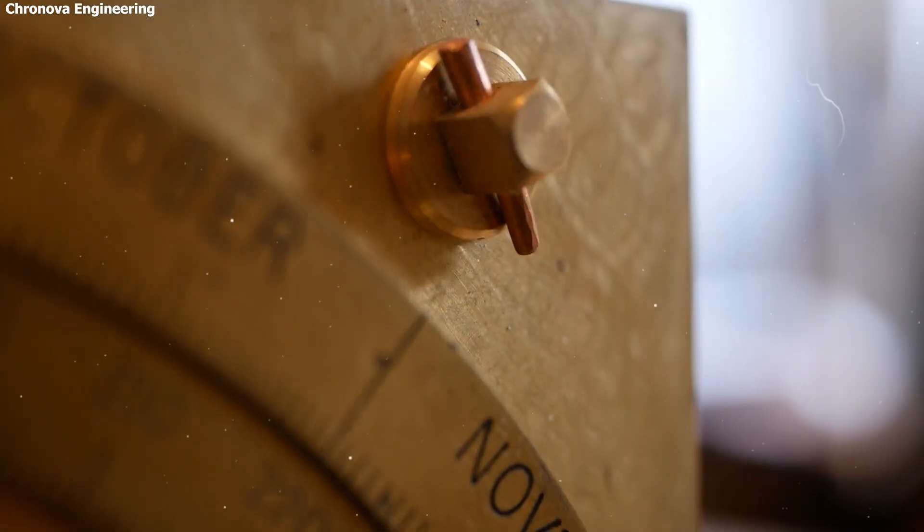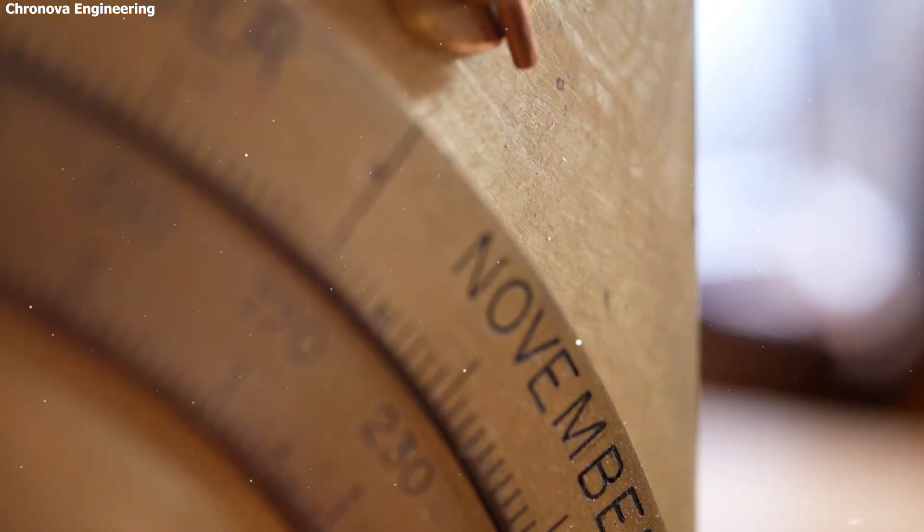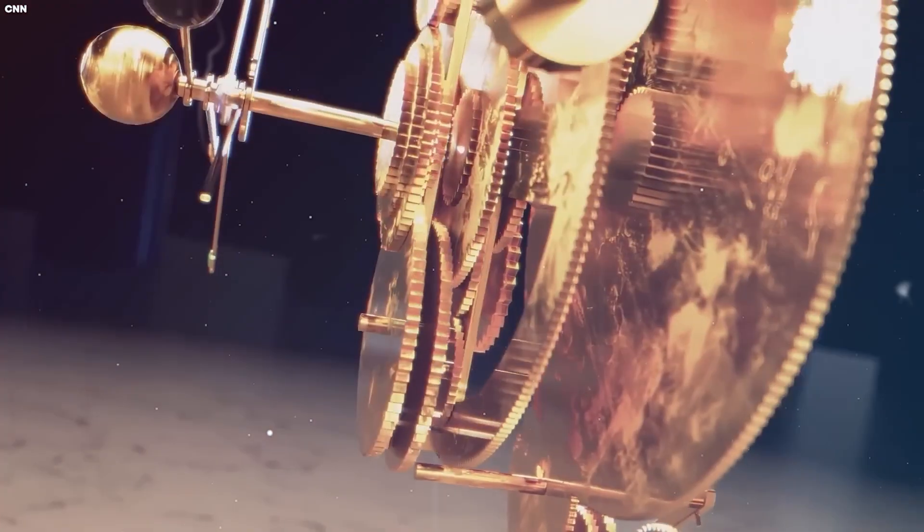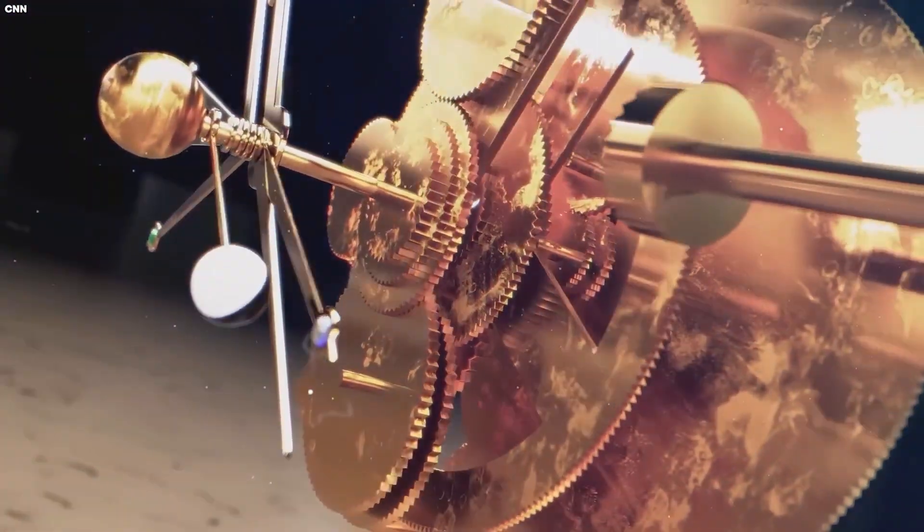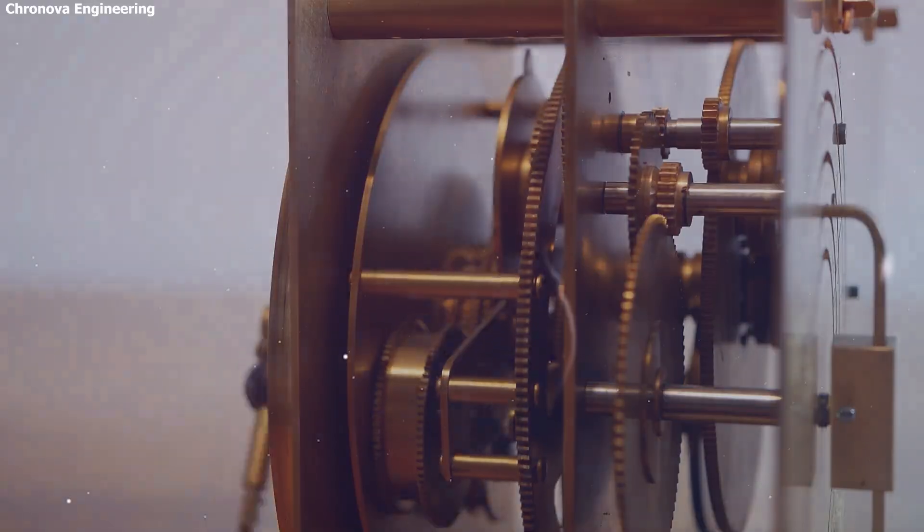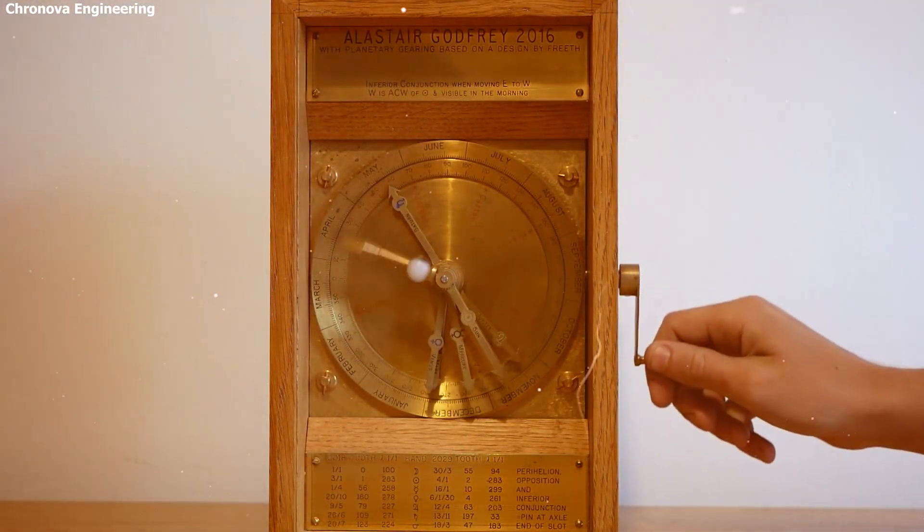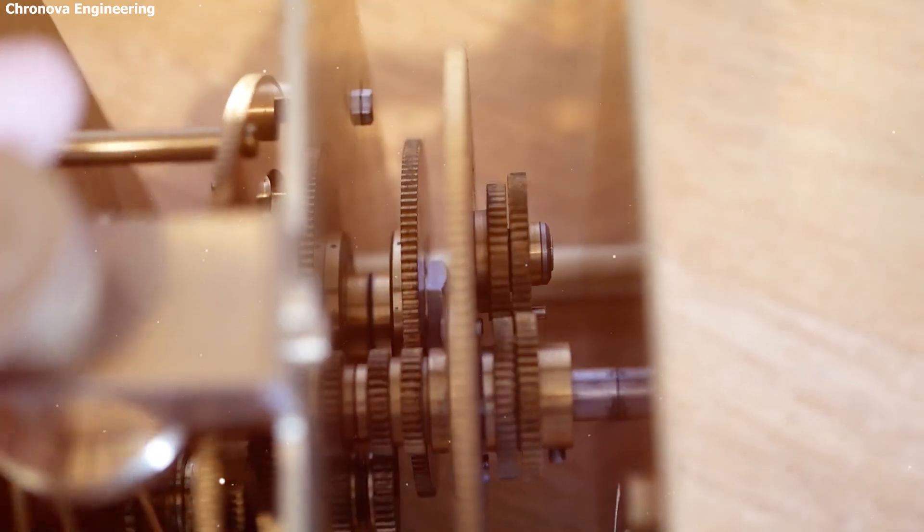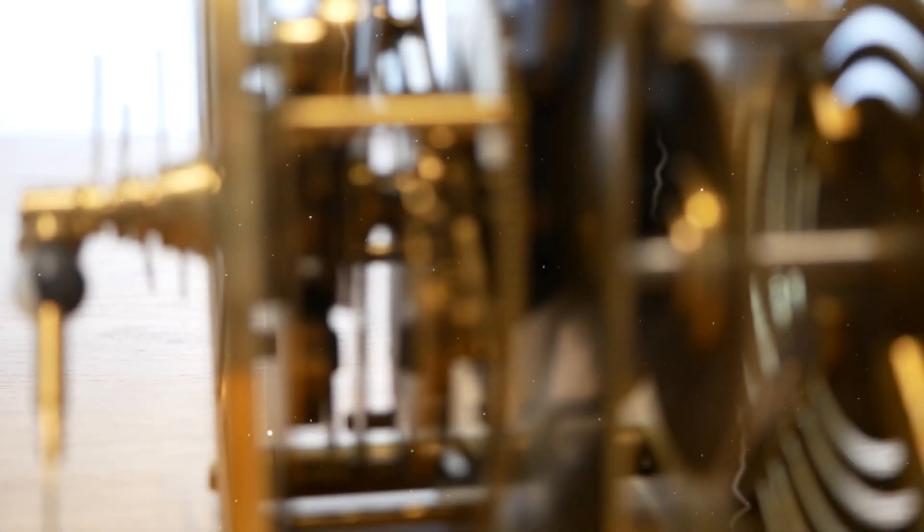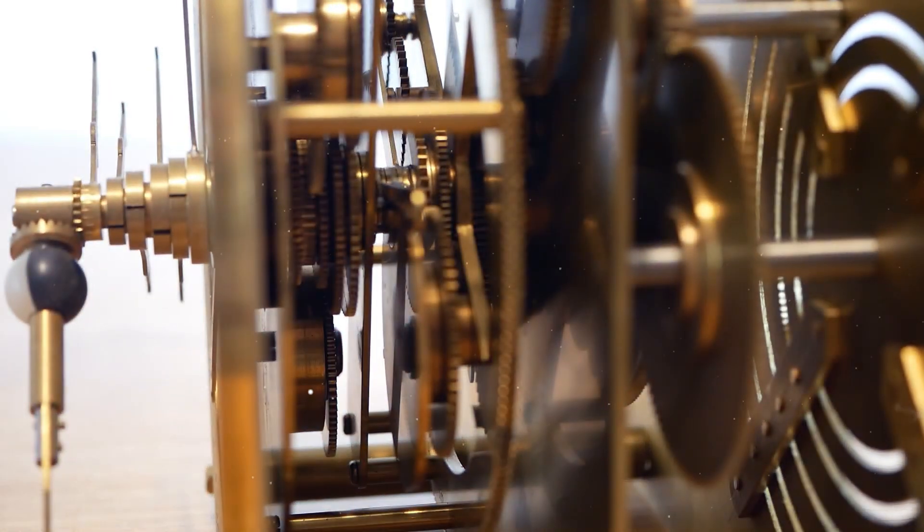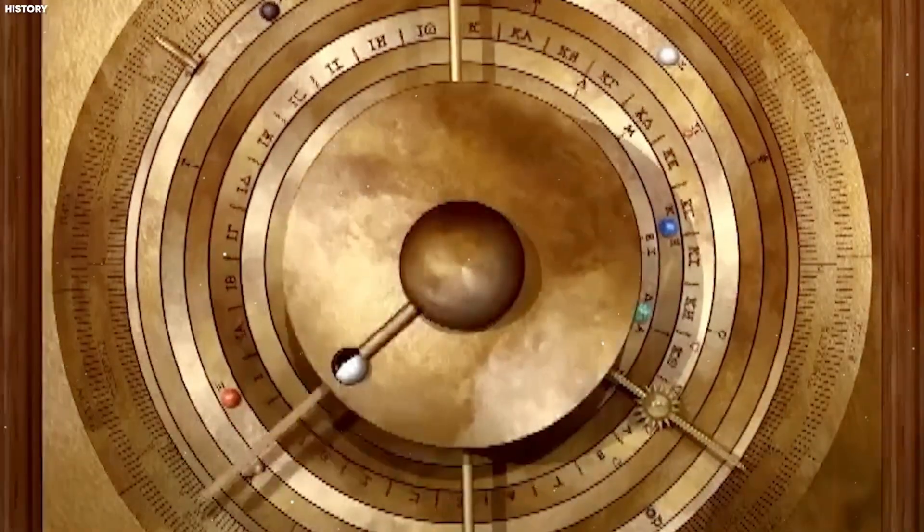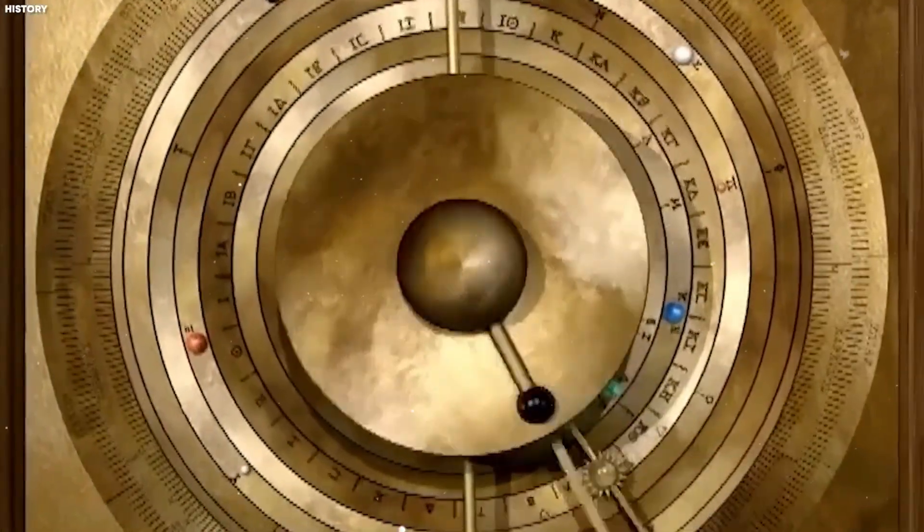Through the Antikythera mechanism, the Greeks captured the language of the stars and translated it into turning gears and rotating dials long before the concept of a clock even existed. They calculated lunar and solar eclipses with precision, predicted planetary alignments, and even tracked the four-year cycle of the Olympic Games—all through pure mechanical logic. And what's even more extraordinary: this wasn't the work of a single genius. It was the product of an entire culture, one that blended art, science, and philosophy into a single pursuit—understanding the cosmos and humanity's place within it.